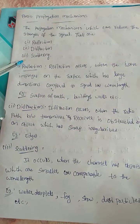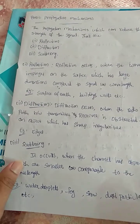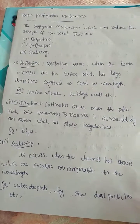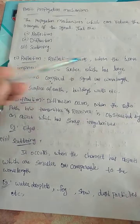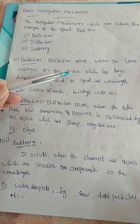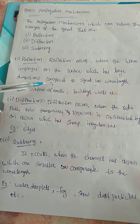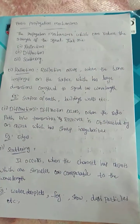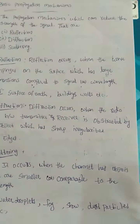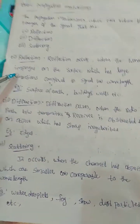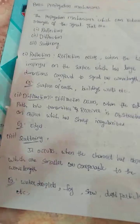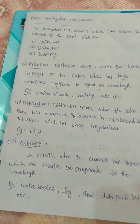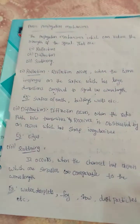First, let's look at reflection. Reflection occurs when the wave impinges on a surface which has large dimensions compared to the signal. 'Impinges' means when the wave is striking or obstructing on the surface. For example, consider a transmitter and a receiver.